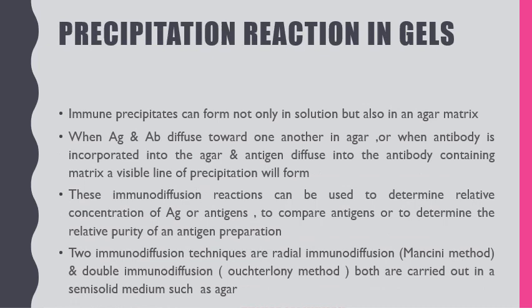The second reaction is precipitation reaction in gel. Immune precipitates can form not only in solution but also in an agar matrix. When antigen and antibody diffuse towards one another in agar, or when antibody is incorporated into the agar and antigen diffuses into the antibody-containing matrix, a visible line of precipitation is formed. This immunodiffusion reaction can be used to determine the relative concentration of an antigen or antibody and to determine the relative purity of an antigen preparation. There are two immunodiffusion techniques: radial immunodiffusion, also called the Mancini method, and double immunodiffusion, also called the Ouchterlony method, both carried out in a semi-solid agar medium.